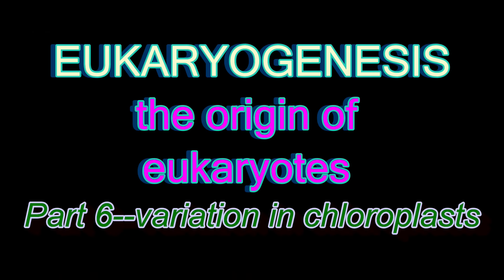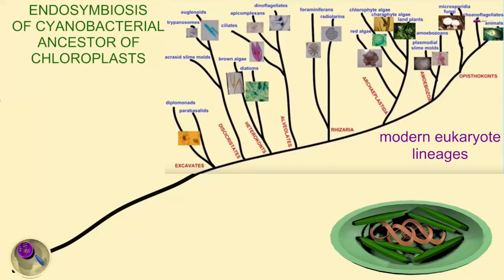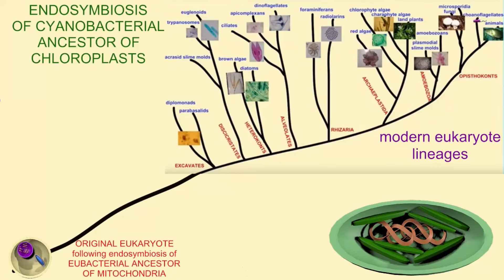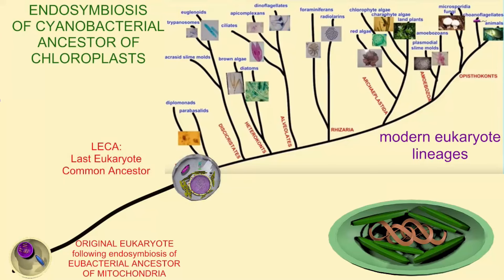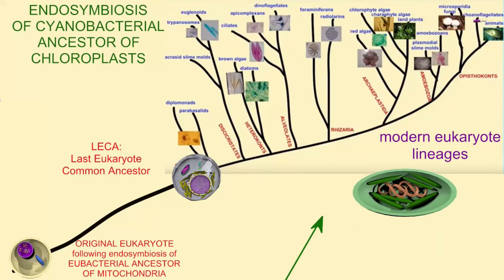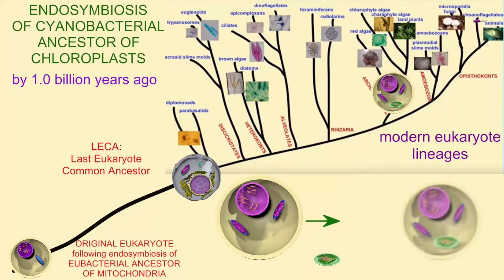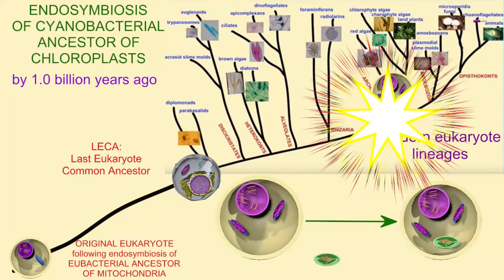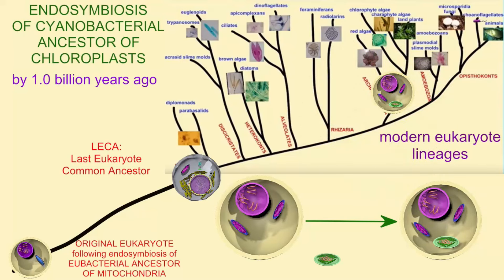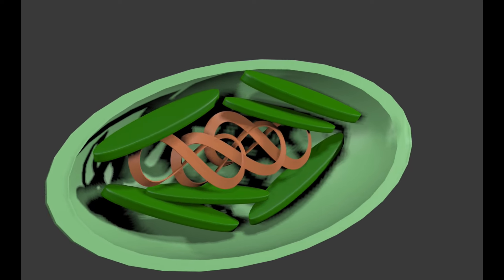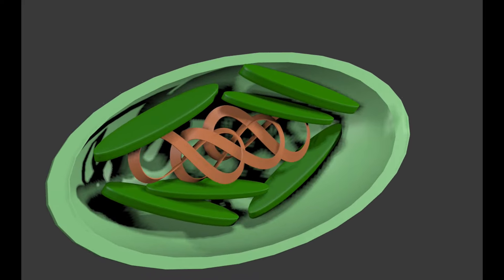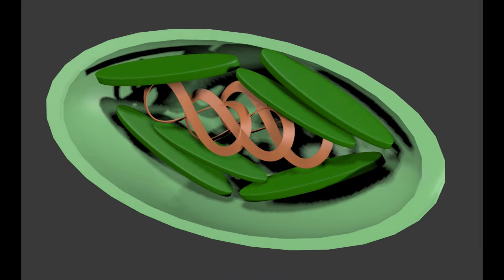Somewhere between two billion and a billion and a half years ago, an endosymbiosis occurred in which the ancestor of mitochondria entered the proto-eukaryotic cell, helping give rise to the eukaryotes. Later, by one billion years ago, a second endosymbiosis had occurred in one lineage of amoeba-like eukaryotes, in which a cyanobacterium — a bacteria performing photosynthesis thanks to its green pigment chlorophyll — entered as an endosymbiont.